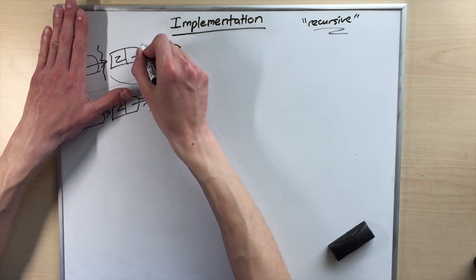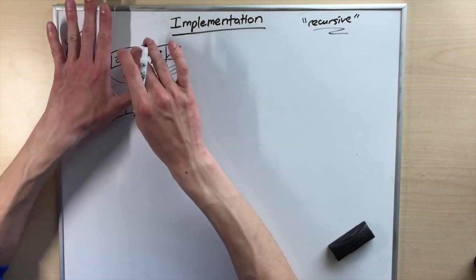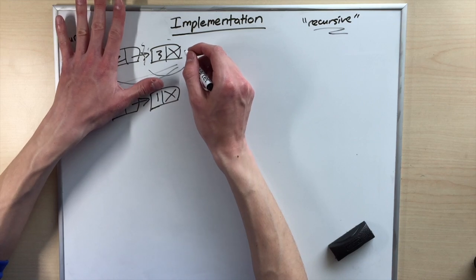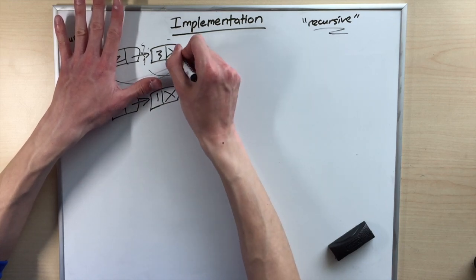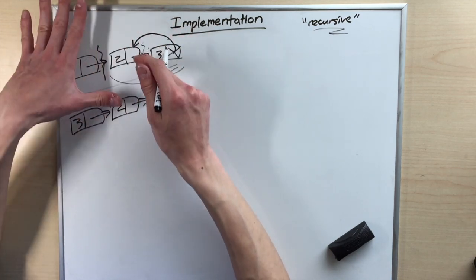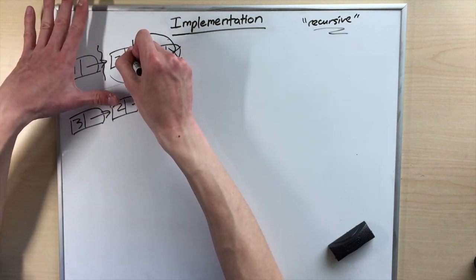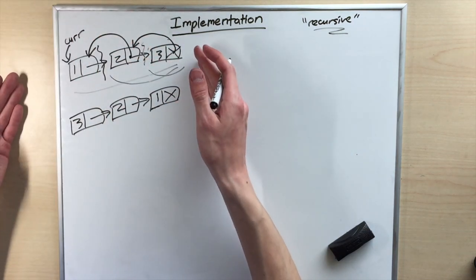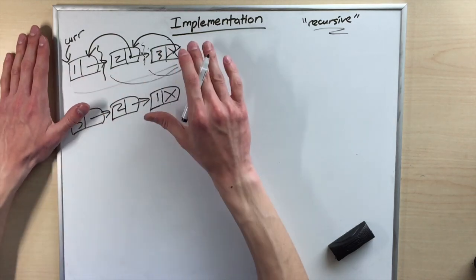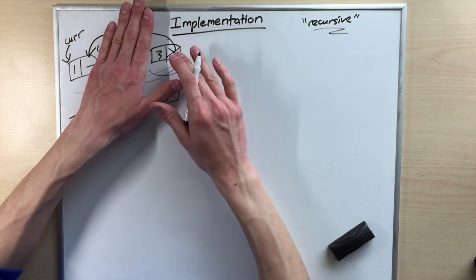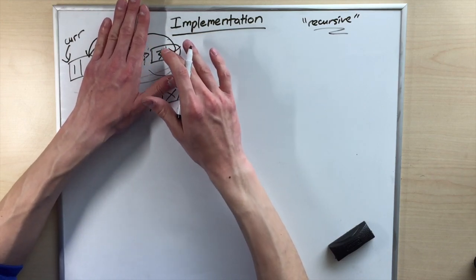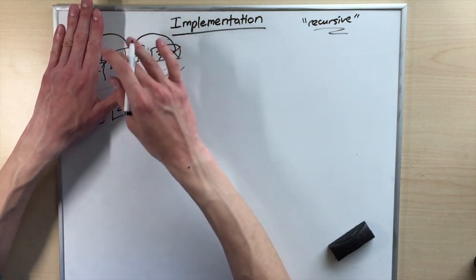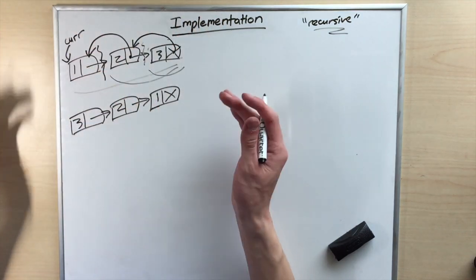We separate the first node from the rest of the linked list and say we want to reverse this smaller problem first. This is still somewhat of a big problem — two nodes — so let's split it again. Our even smaller problem is now just one node by itself, which is already reversed. All we have to do at this point is start connecting this node back to the node that came before, and then connect that node back to the first node. Your entire linked list is now reversed.